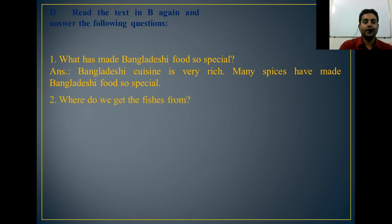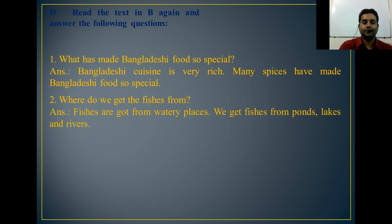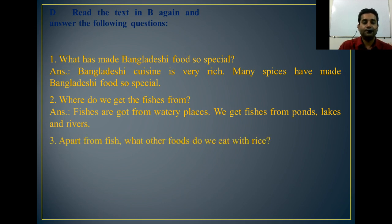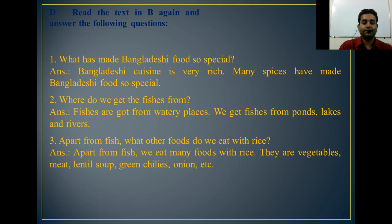Question two: 'Where do we get the fishes from?' Answer: Fishes are got from watery places. We get fishes from ponds, lakes and rivers. Question three: 'Apart from fish, what other foods do we eat with rice?' Answer: Apart from fish, we eat many foods with rice. They are vegetables, meat, lentil soup, green chillies, onion, etc.